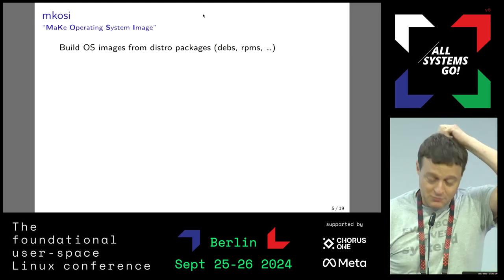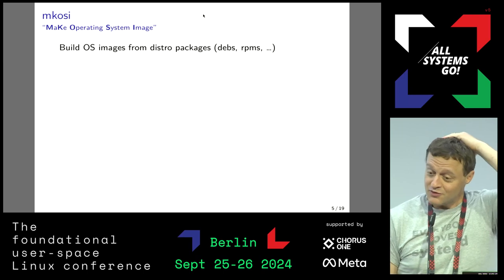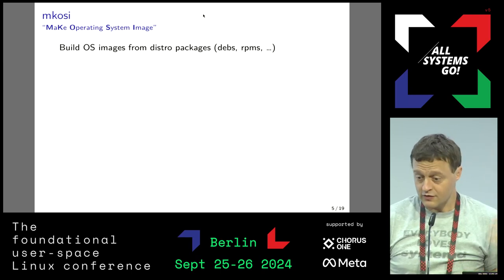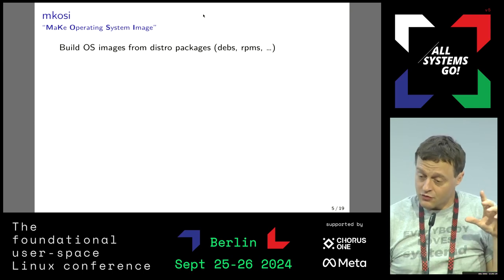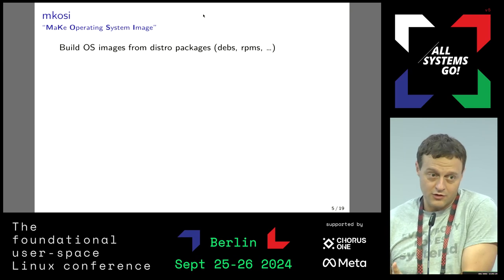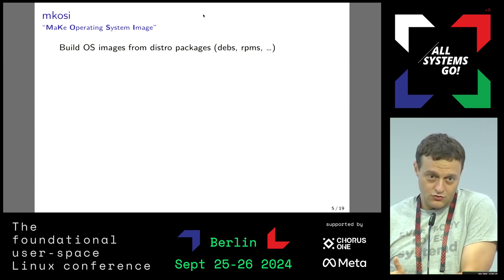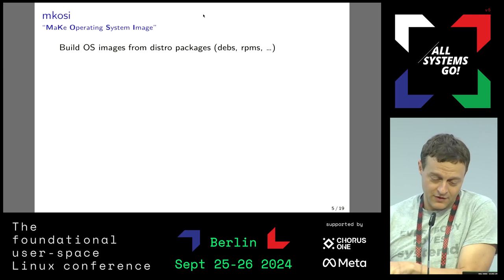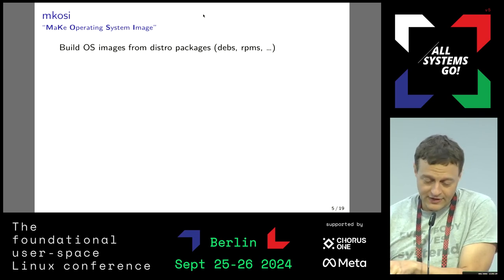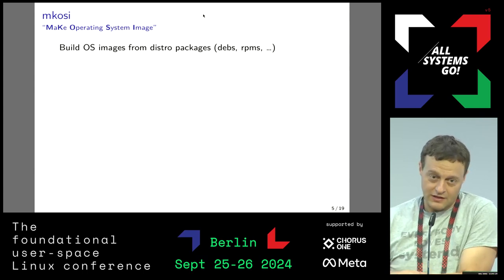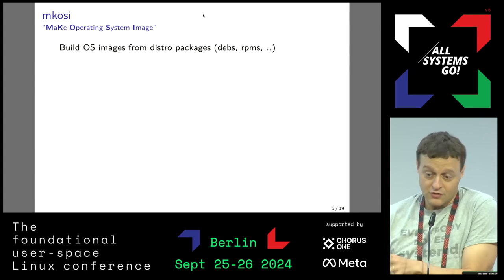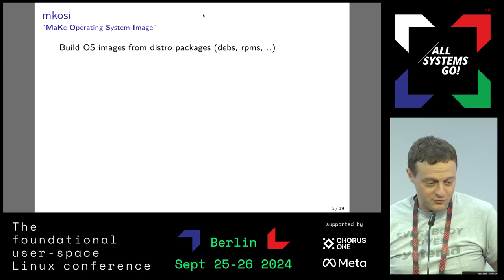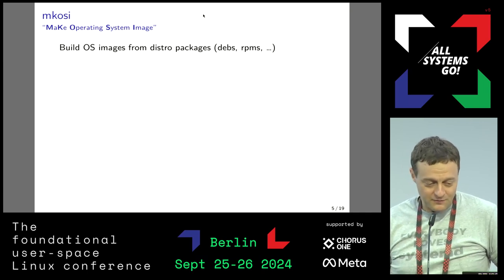The particular implementation also mentioned during the last two days is MKOSI. It builds OS images from distro packages. The latest versions of MKOSI even do this thing where, if you start from a systemd repo and do an MKOSI build, it will download the Fedora distgit repository, build systemd, build a real Fedora package with the Fedora spec file, and install that. So it takes the idea of doing things from packages very far.